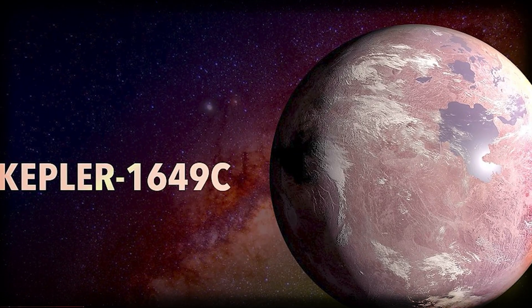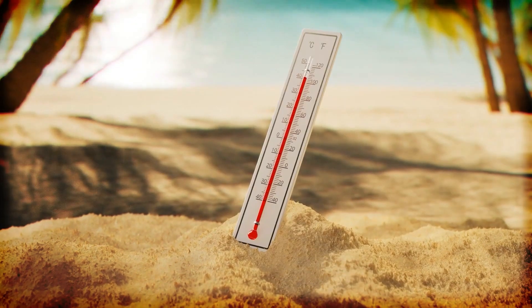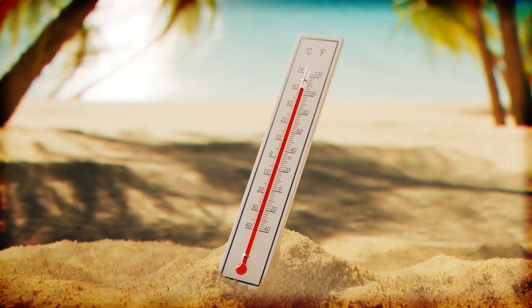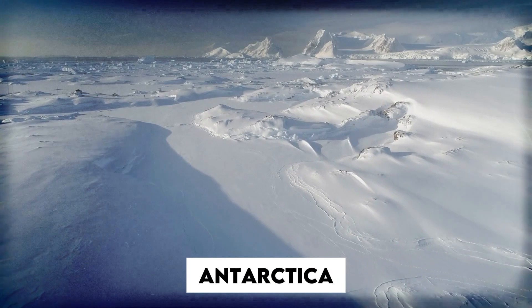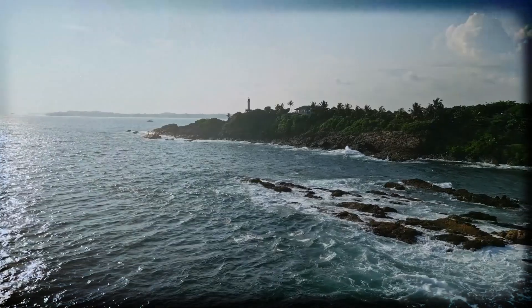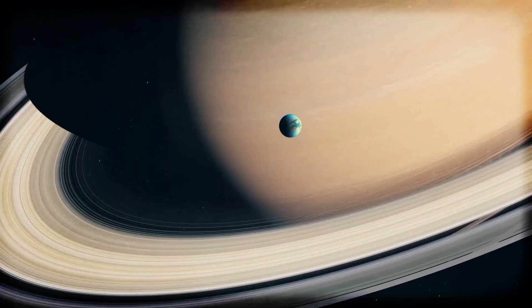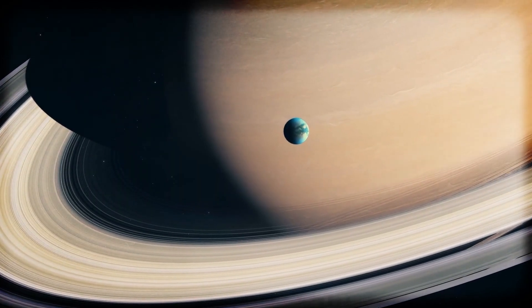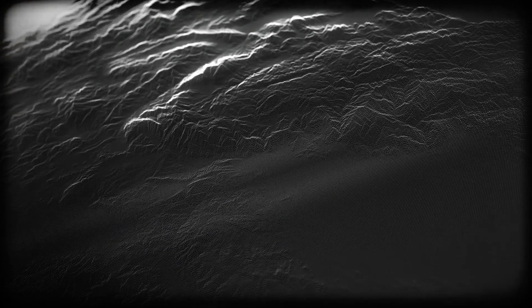So on planets like Kepler 1649c, surface temperatures could range anywhere from minus 100 Fahrenheit to 116 Fahrenheit, colder than Antarctica on one side, hotter than Death Valley on the other. Not exactly ideal beach weather. Now here's the kicker: as of today, we just don't have the tech to fully examine these distant atmospheres and compositions. We can't yet say with certainty what these worlds are truly like on the surface yet.